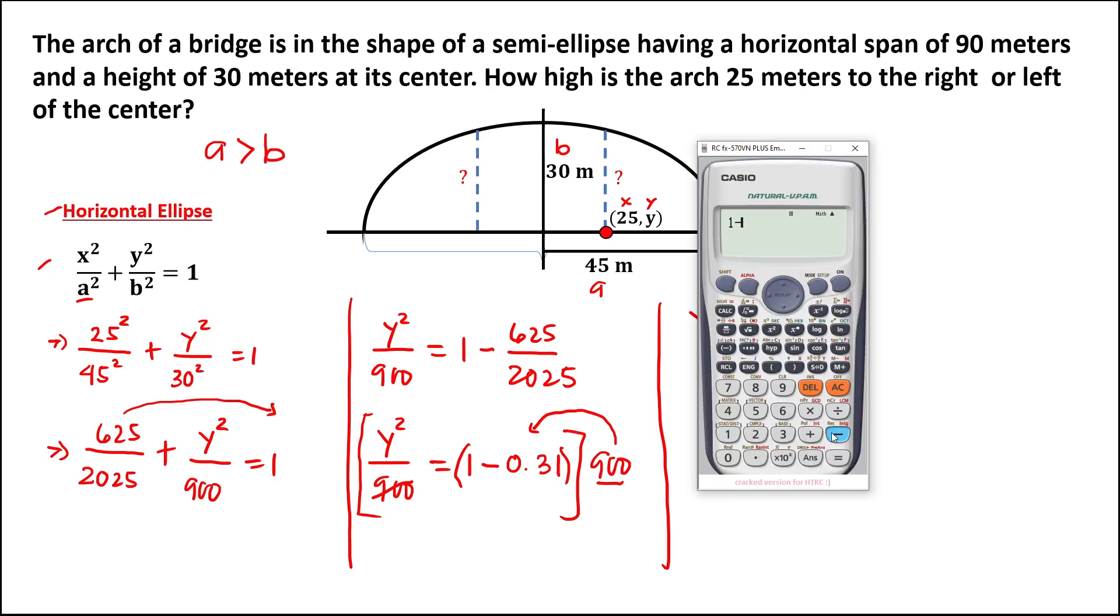We have 1 minus 0.31, equals, then times this 900. So that's 621. So this is equal to 621.